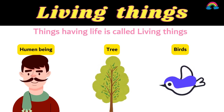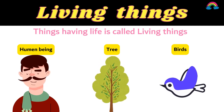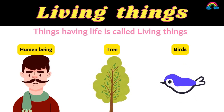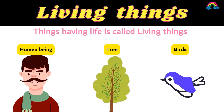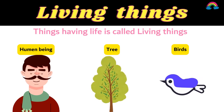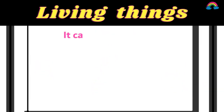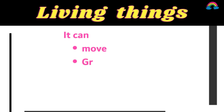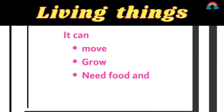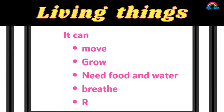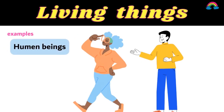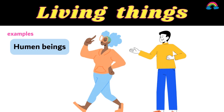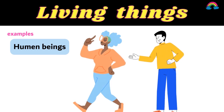Living things include human beings, trees, birds, animals, and more. Living things can move, grow, and they need food and water. They can breathe and reproduce. For example, human beings are living things.